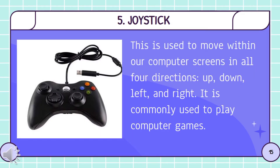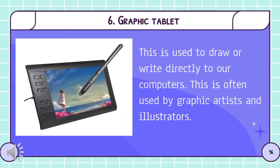Number 5: Joystick. This is used to move within our computer screens in all four directions — up, down, left, and right. It is commonly used to play computer games. Number 6: Graphic tablet. This is used to draw or write directly to our computers.